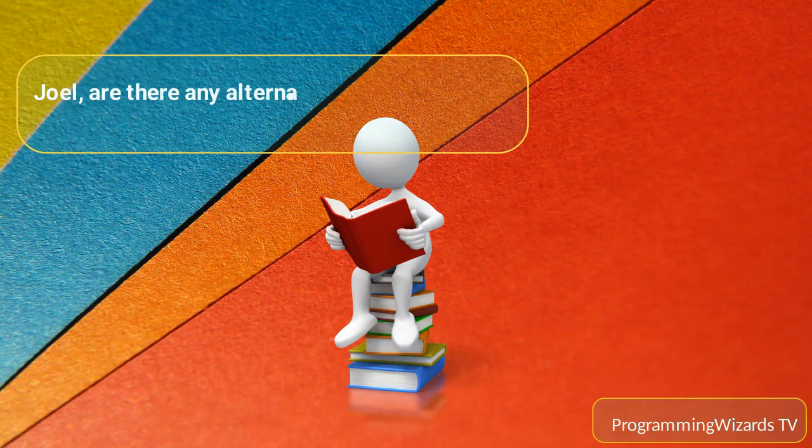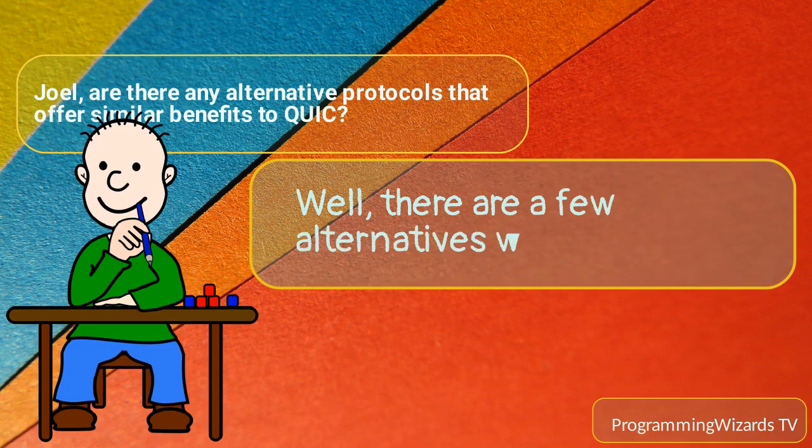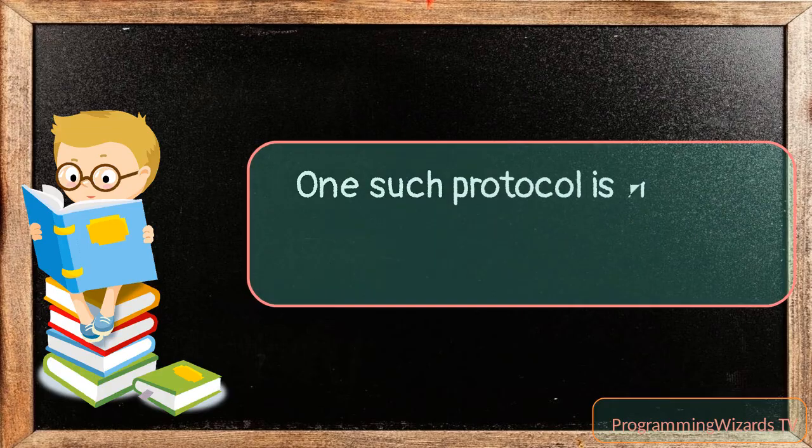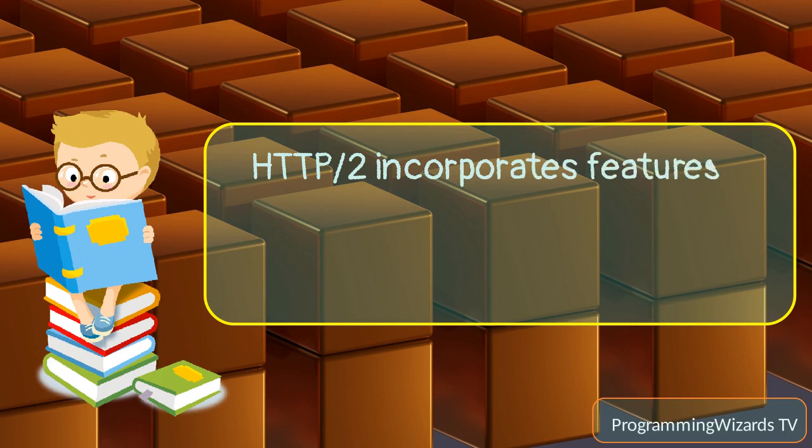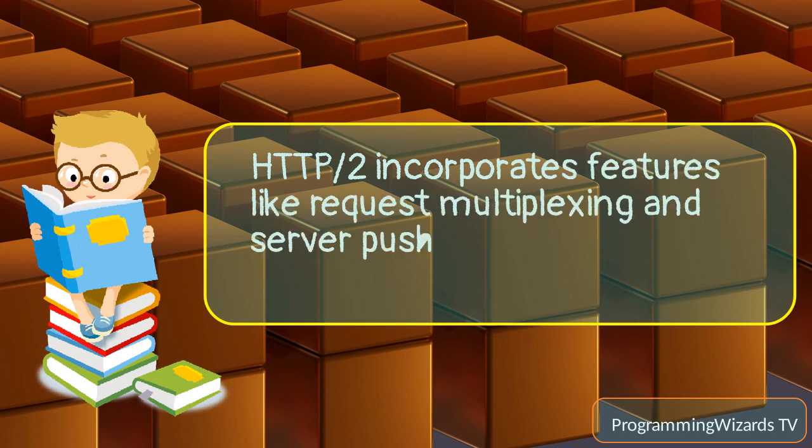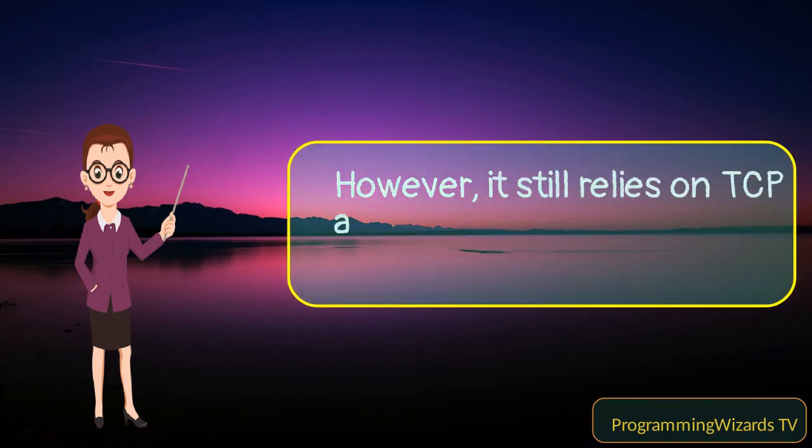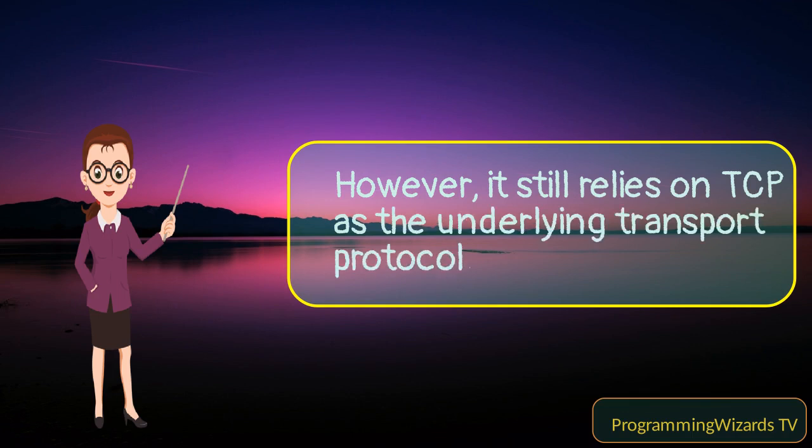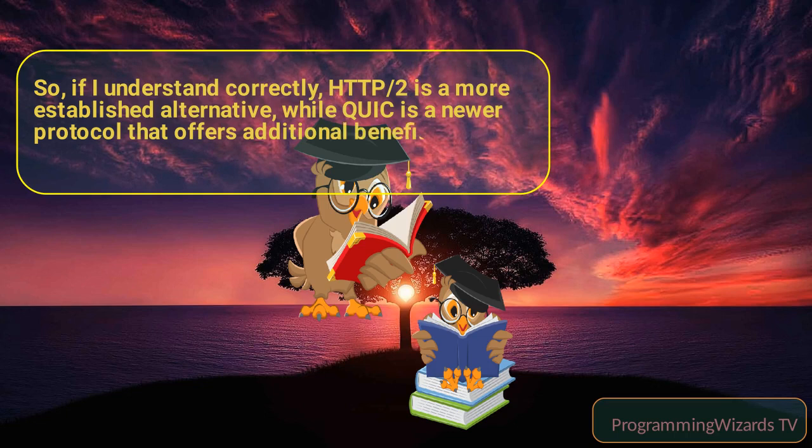Joel, are there any alternative protocols that offer similar benefits to QUIC? Well, there are a few alternatives worth mentioning. One such protocol is HTTP/2, which is an improved version of the traditional HTTP protocol. HTTP/2 incorporates features like request multiplexing and server push, which enhance performance and reduce latency. However, it still relies on TCP as the underlying transport protocol. So if I understand correctly, HTTP/2 is a more established alternative, while QUIC is a newer protocol that offers additional benefits like built-in encryption and reduced latency.